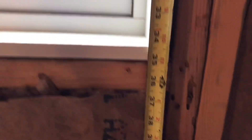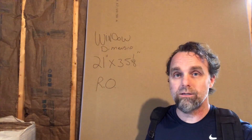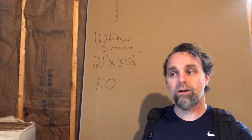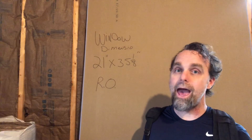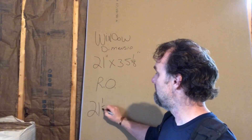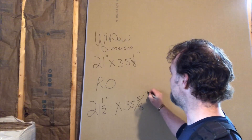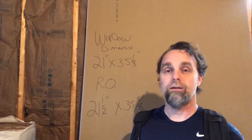The width measures about 21 inches and the height looks like 35 and 1/8 inches. Remember: width is always the first number, height is always the second. Our window dimensions are 21 by 35-1/8 inches. To come up with a rough opening without a schedule, it's simple — add a half inch to each dimension. So 21 by 35-1/8 becomes 21-1/2 by 35-5/8 inches — that gives you the correct rough opening size.